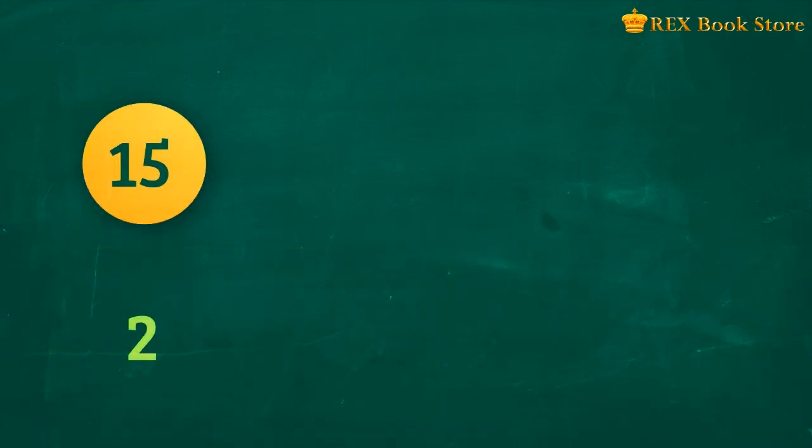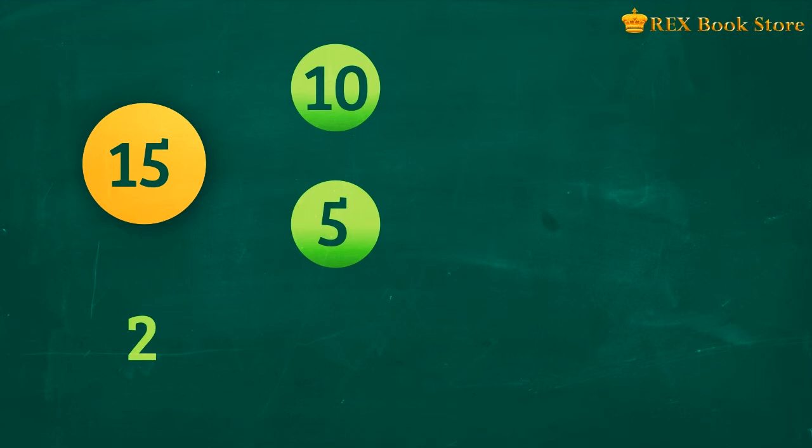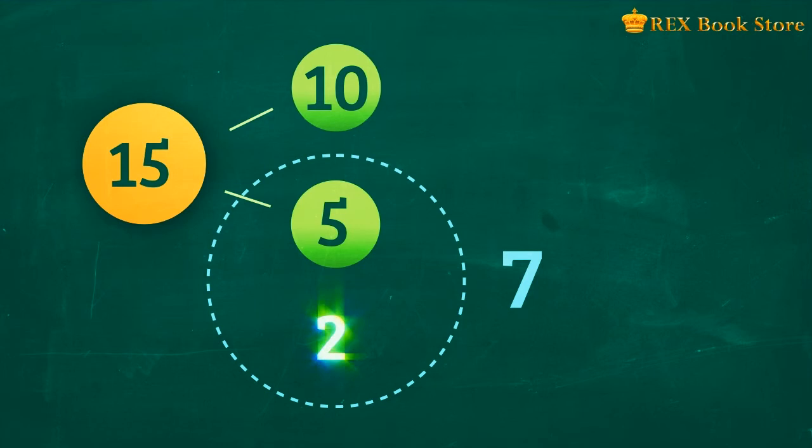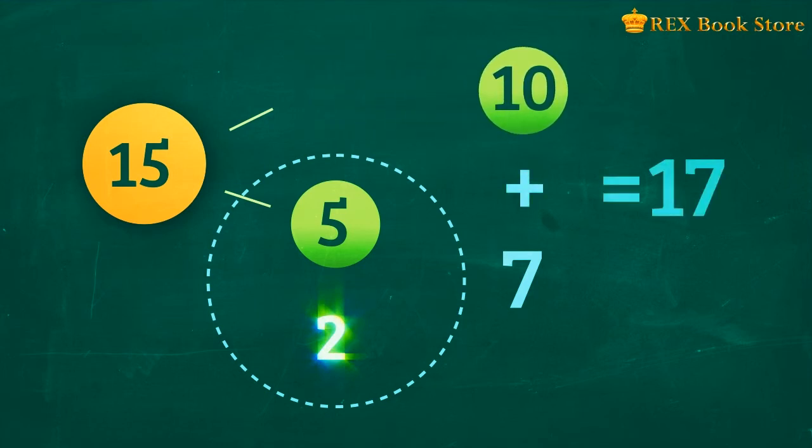As a number bond, we show 15 as two parts, 5 and 10. Regroup 5 and 2 to form 7, and we can show that 2 plus 15 is equal to 7 plus 10, which is equal to 17. So 2 plus 15 is equal to 17.